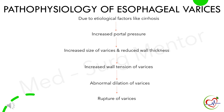Pathophysiology of esophageal varices: Due to etiological factors like liver cirrhosis, there is increased portal pressure. This leads to increased size of varices and reduced vessel wall thickness. Gradually, there is increased wall tension on the varices which leads to abnormal dilation of varices. It finally contributes to rupture and blood flows.